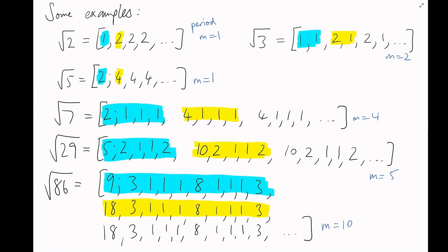Perhaps it's no surprise that we got a repeating pattern — after all, we saw that substituting the continued fraction of φ = [1; 1, 1, 1, ...] into itself gave a quadratic equation. And all of these numbers are just square roots as well, so they similarly satisfy quadratic equations.